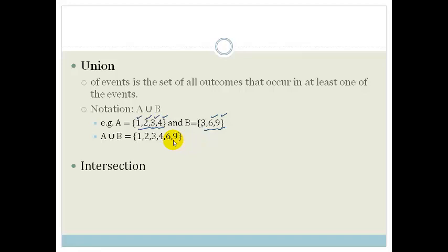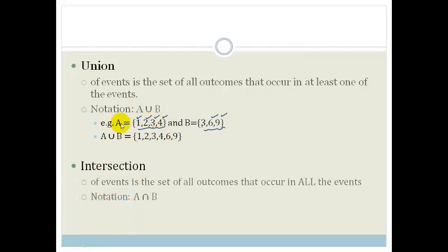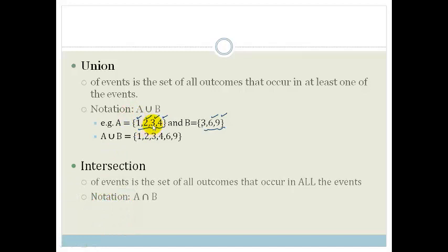Whereas an intersection is a set of outcomes that occurs in all the events. So it has to occur in every event. So for example with this one, the A intersection B, if we have a look and I'm just going to change color so you can see what I'm doing. If we look at this, we look at exactly the same example. Do you see that the only numbers that occur in both sets A and B in this case is going to be 3. So 3 occurs in both of these sets, so therefore the intersection of A and B is 3.